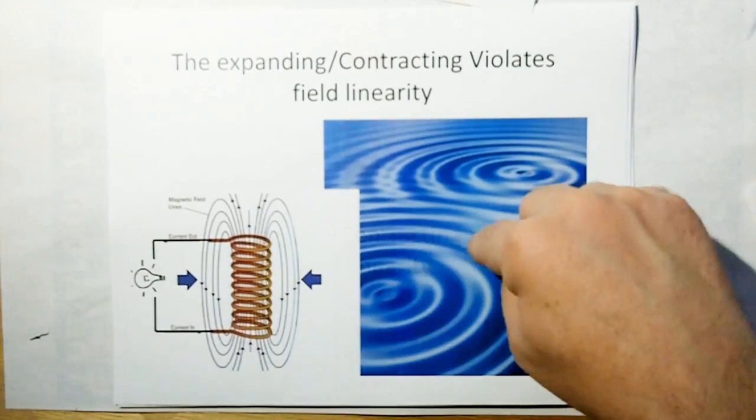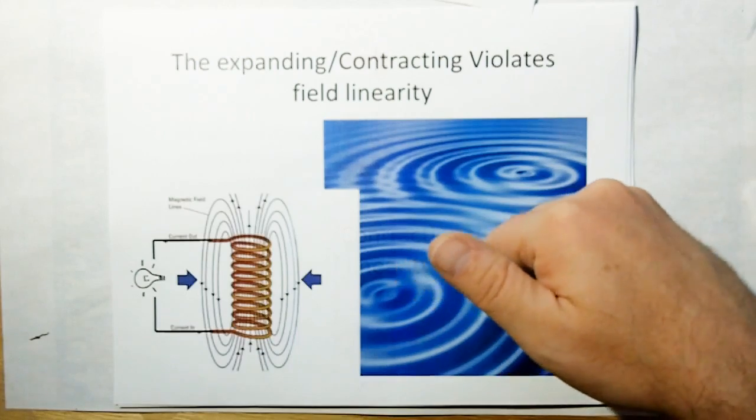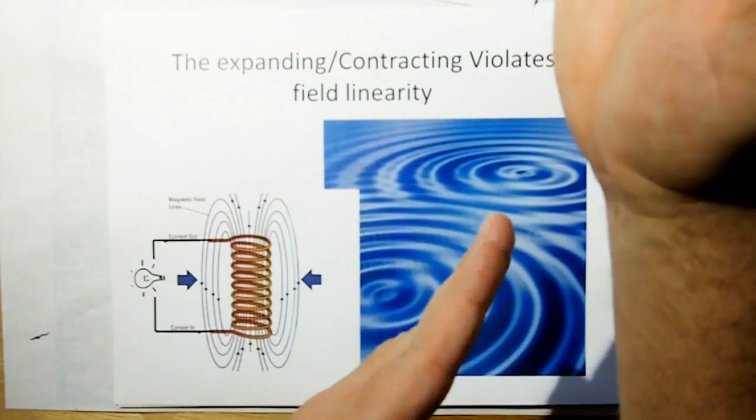Magnetic fields pass right through each other just like water waves do. Granted, where they intersect you get positive and destructive interference, but that energy continues on.